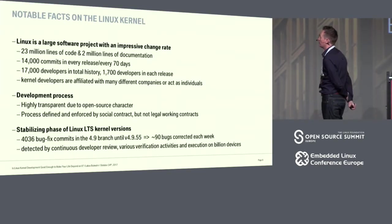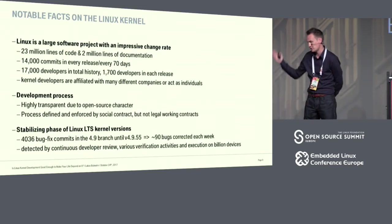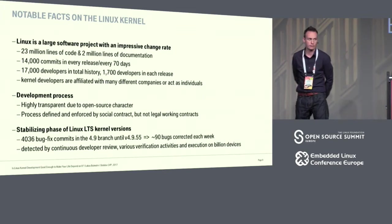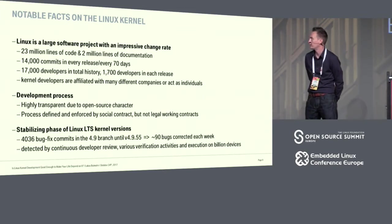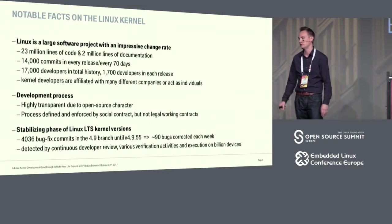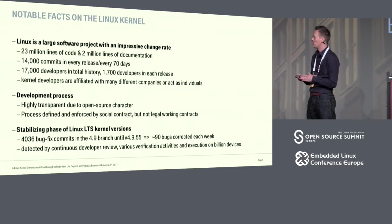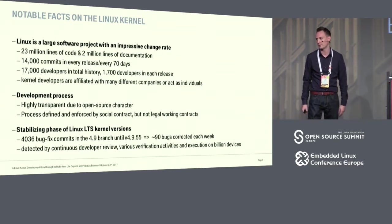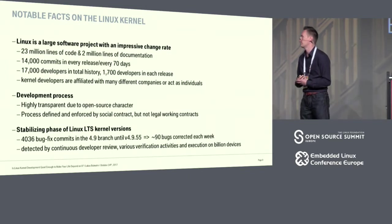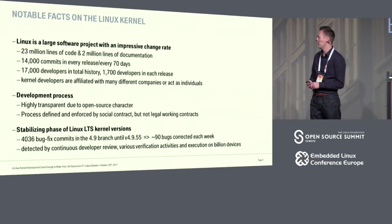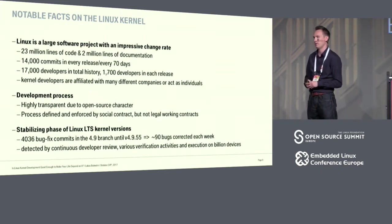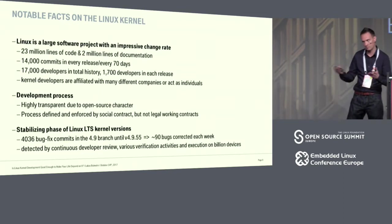Looking at notable facts on Linux kernel development: we have 23 million lines of code, 14,000 commits in every release, over 17,000 developers in total history, and 1,700 contributors in each release. Companies and individuals are involved. The development process is highly transparent and defined by a social contract. The stabilizing phase is impressive — about 90 bugs corrected each week, detected not only by running on devices but by continuously reviewing the code and ongoing verification activities in the community.